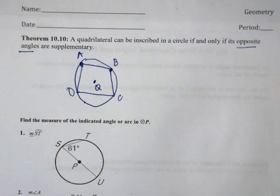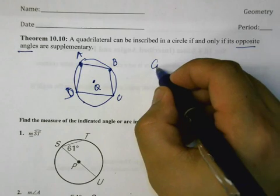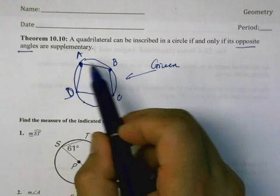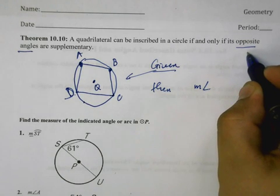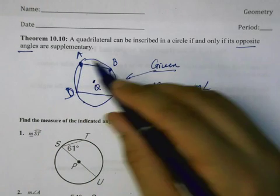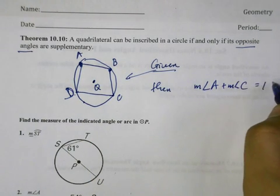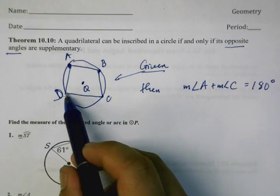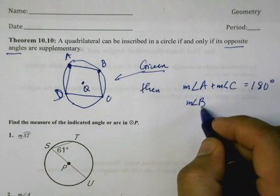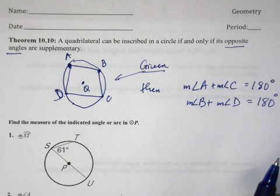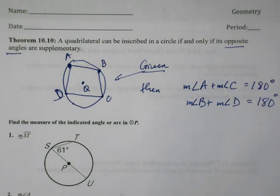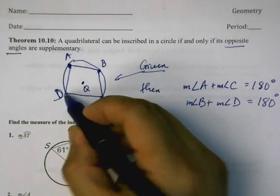Given you have a quadrilateral inscribed inside of a circle, then two things must be true: the opposite angles have to be supplementary. So there are two sets of opposite angles—angle A and angle C have to equal 180 degrees, and also angle D and angle B together have to equal 180 degrees. This is not true of all quadrilaterals. In quadrilaterals it is possible for opposite angles to not add up to 180 degrees. This is only true of quadrilaterals that can be inscribed or placed inside of a circle.